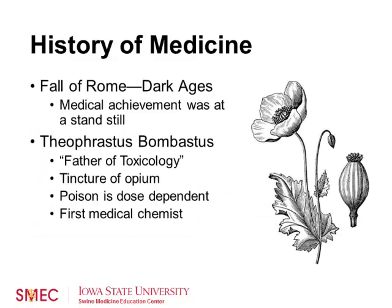Publius Vegetus, around the 5th century, developed a guide to veterinary medicine which included prescriptions for farm animals. During the fall of Rome and the Dark Ages, medical achievement was at a standstill.